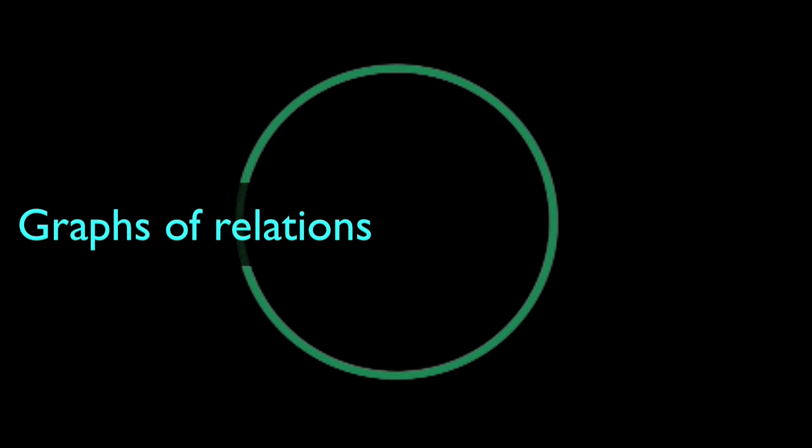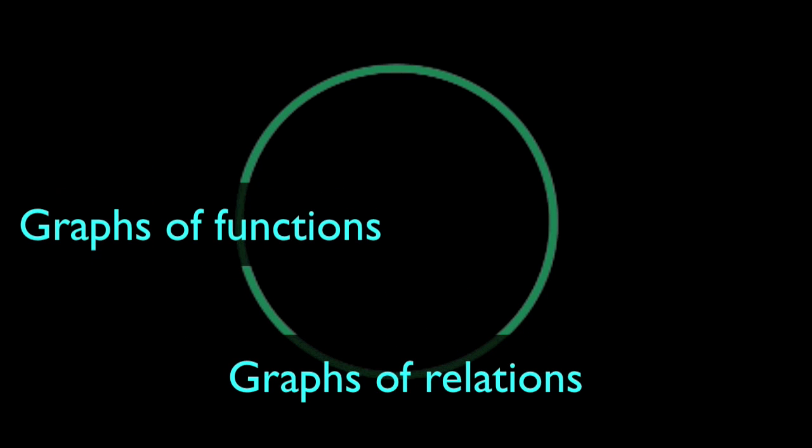Relations that never map one to many are called functions. When mapping numbers to numbers, we're going to be especially interested in functions we can describe using equations. Let's begin by looking at the most general case, graphs of relations.